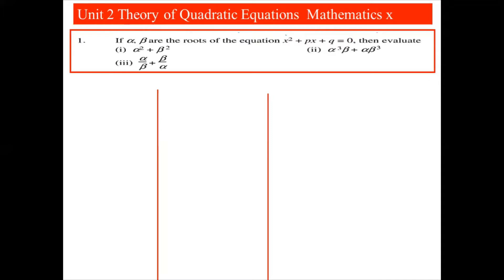If alpha and beta are the roots of the equation x² + px + q = 0, then evaluate: (1) α² + β², (2) α³β + αβ³, (3) α/β + β/α. You can see that all three of these are symmetric functions. So let's start with part one.